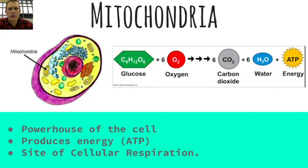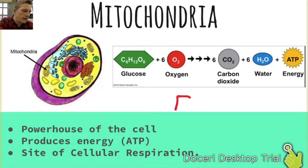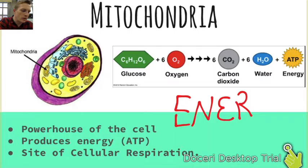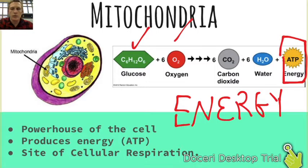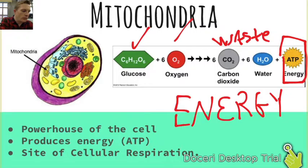Next is the mitochondria — the powerhouse of the cell. This is the part of the cell that accomplishes cellular respiration, or in other words, makes energy. It takes the sugar that we eat and the air that we breathe and turns it into energy. As a result, the waste products of this reaction are carbon dioxide and water. The mitochondria is where energy is made in the cell, so we should definitely remember the term cellular respiration.